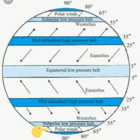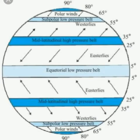Next question: Name the winds that blow in the southern hemisphere. Answer: The easterlies, the westerlies, and the polar winds. Next question: In which direction do the easterlies blow in the northern and southern hemispheres? Answer: In the northern hemisphere, from northeast to southwest, and in the southern hemisphere, from southeast to northwest.